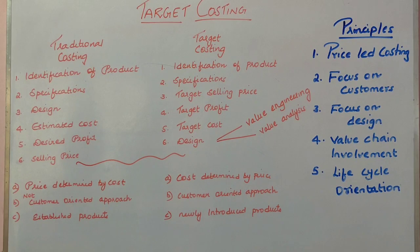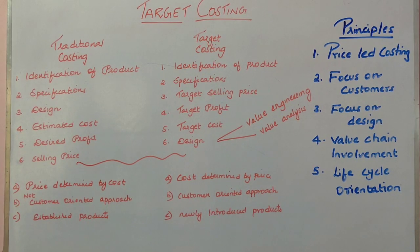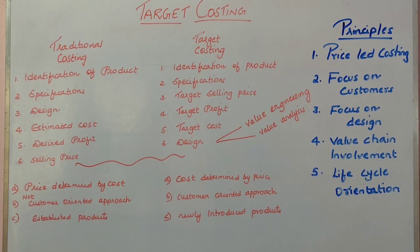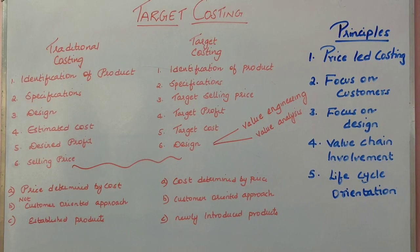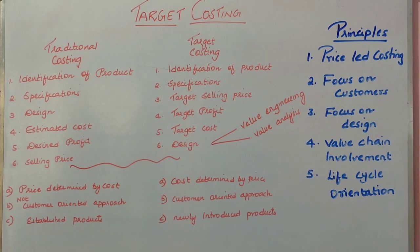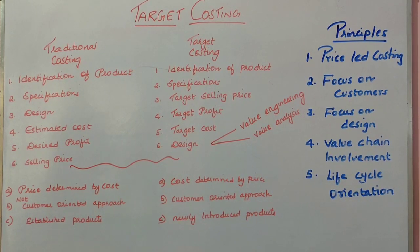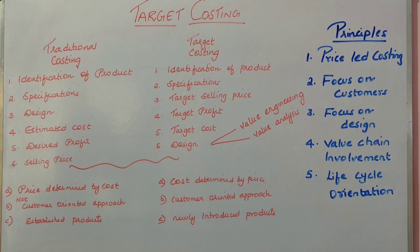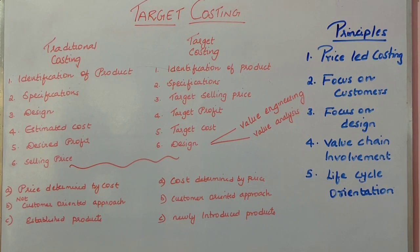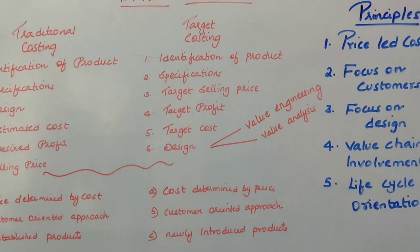To that cost, a certain percentage of profit is added up, and that total is the selling price for the product. This concept is known as traditional costing.